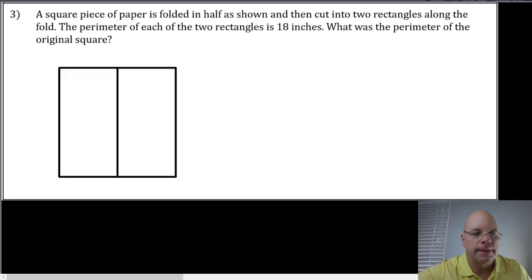Problem number three, a square piece of paper is folded in half as shown, and then cut into two rectangles along the fold. The perimeter of each of the two rectangles is 18 inches. What was the perimeter of the original square? So we know, let's see. Well, for a square, we don't need to use base and height, we could just use side and side, right? This side length is equal to this side length. So we can just use S for both sides.